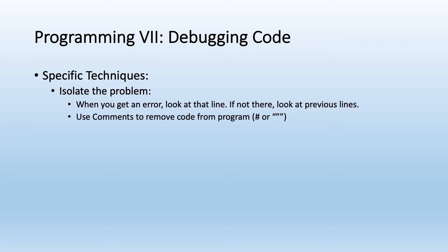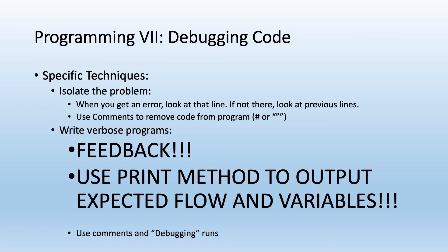For specific techniques, isolating the problem is useful. When you get an error, look at the indicated line, and if it looks fine, look at the previous line. A common issue is unclosed parentheses, brackets, or quotation marks causing an error on the next line. You can also use comments to remove code from the program — it's like a genetic knockout, removing pieces to isolate which part is causing the problem.